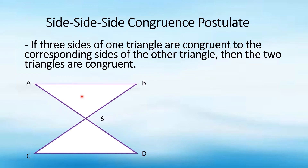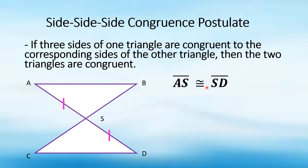So let's say we have this figure. As you can see, we have two triangles formed: triangle ABS and triangle CDS. In this example, let's say that point S is the midpoint of side AD. When we say midpoint, it divides the segment into two equal parts. So we can say that side AS is congruent to side SD. In symbol, we write side AS is congruent to side SD. That is the first side.